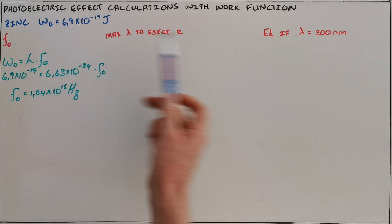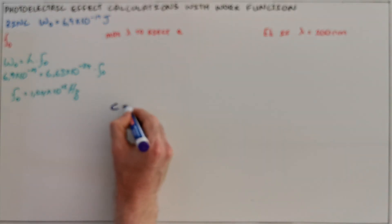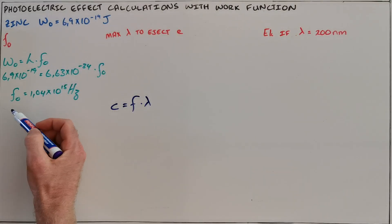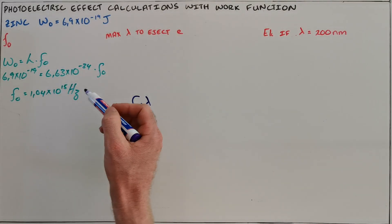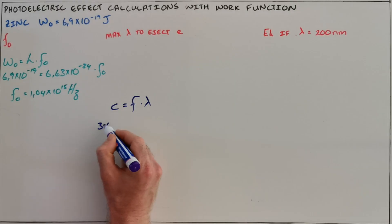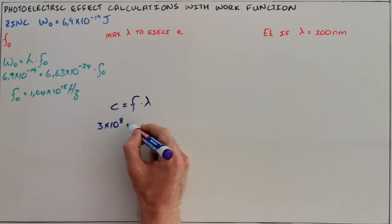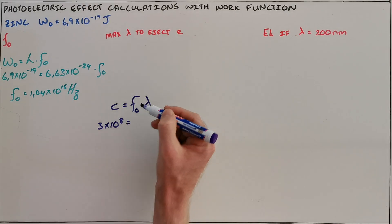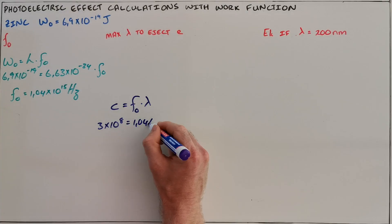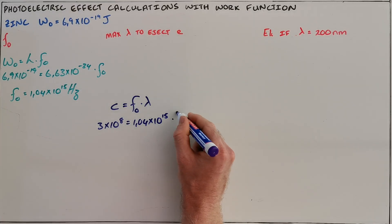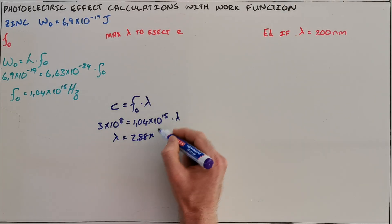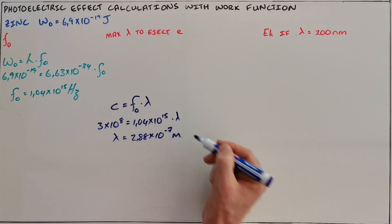A similar question is to ask for the maximum wavelength instead of the minimum frequency. This is possible because frequency and wavelength are inversely proportional, meaning where we have a minimum frequency that can eject a photoelectron, we also have a maximum wavelength. Using c = fλ, where the speed of light is 3×10⁸ and the threshold frequency is 1.04×10¹⁵, the maximum wavelength is 2.88×10⁻⁷ meters.